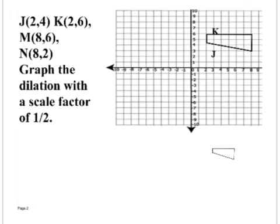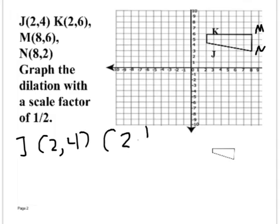Write this down. Graph the dilation with a scale factor of one-half. The points are: J at (2, 4), K at (2, 6), N at (8, 6), and N at (8, 2). We're going to make a dilation with a scale factor of one-half. I take point J at (2, 4) and multiply each coordinate by the scale factor — so 2 times one-half and 4 times one-half.